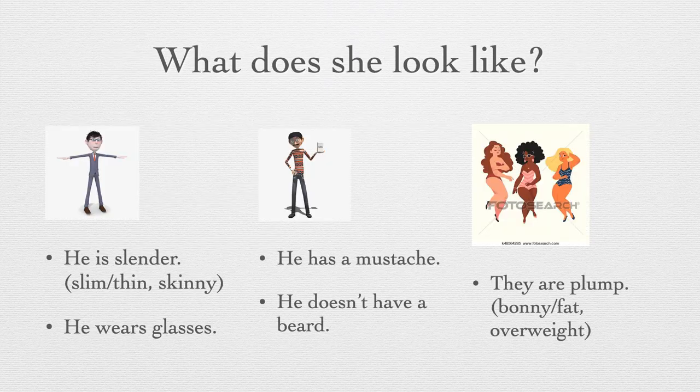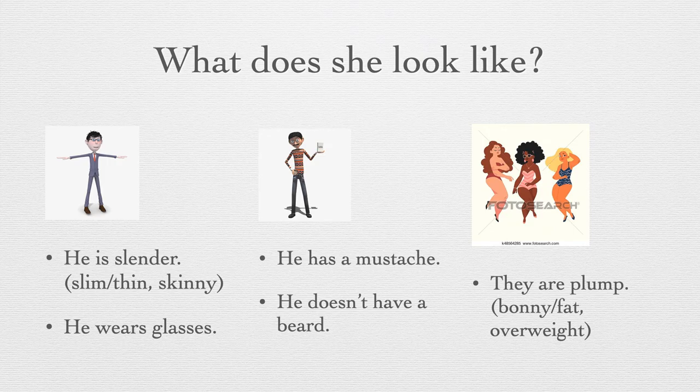Vamos ver algumas formas de responder. What does she look like? Qual a aparência dela, como ela aparenta? He is slender. Slender — vocês podem ver que ele é magrinho, né? Outra forma positiva de dizer que uma pessoa é esbelta seria slim. Thin e skinny são mais negativos.